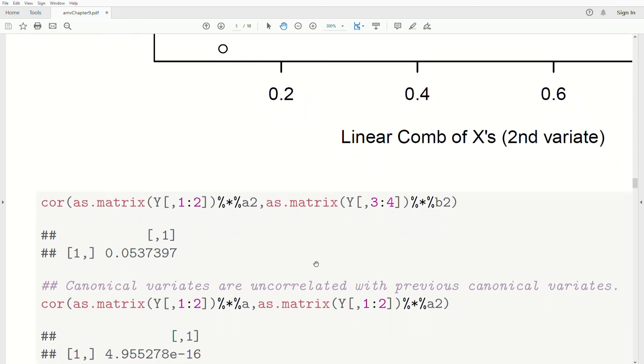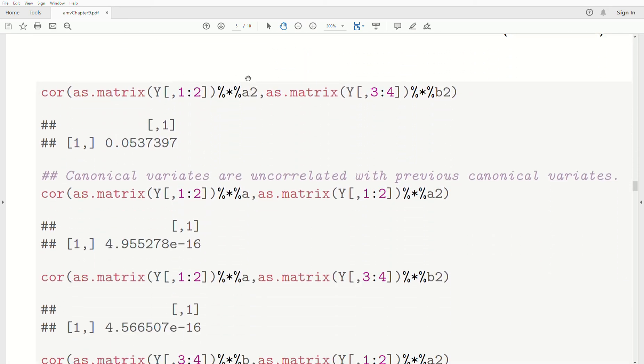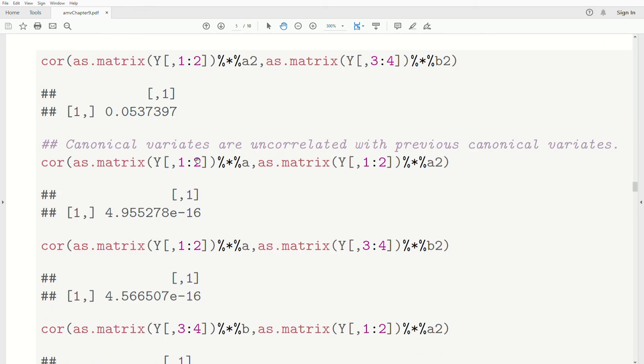So if we look at what the correlation is, the correlation of the linear combination of the Ys, linear combination of the Xs is 0.05, which is actually pretty small. So this tells us that we're not going to use the, we're dropping the second canonical variates. And we're only just going to use the first. And now this next four lines, and then we're finished with the video.